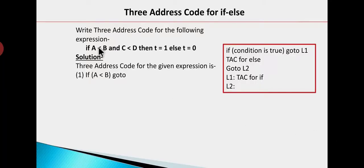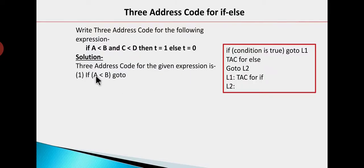Now consider another example: if a less than b AND c less than d, then t equals 1, else t equals 0. We need to check if a less than b. If condition is true or false — if false, we need to go to the else part.